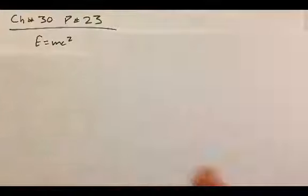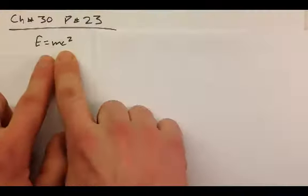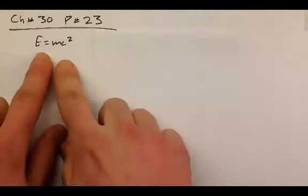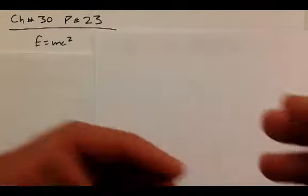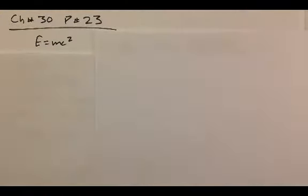So let's start out chapter 30, our one and only assignment from chapter 30, just with a little review of Einstein's famous equation. E equals mc squared. Energy is mass, mass is energy. One can get turned into the other. They're really the same side of the different coin, they're one in the same.